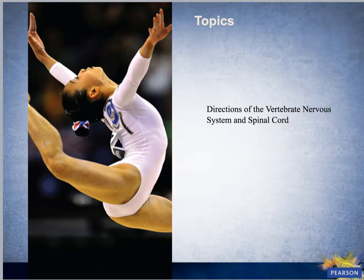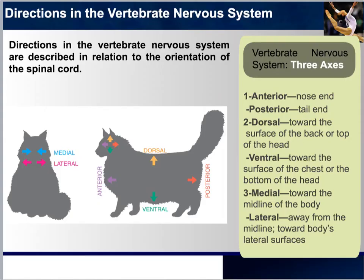In this module we will learn about the directions of the vertebrate nervous system and spinal cord. Understanding the directions of the vertebrate nervous system is essential to be able to treat tumors and understand the impact that such are having on behavior. The directions of the vertebrate nervous system are described in relation to the orientation of the spinal cord.